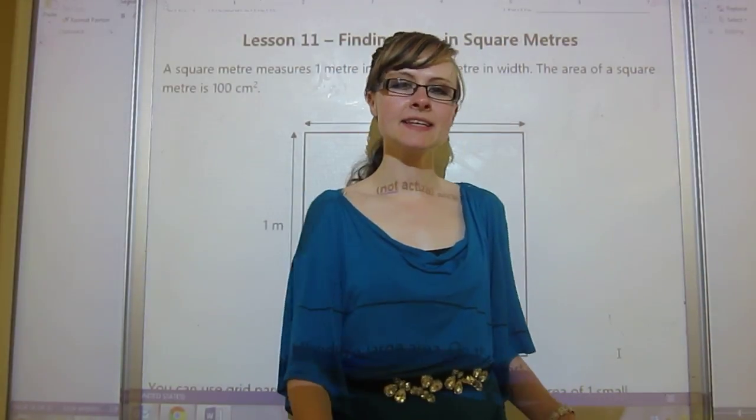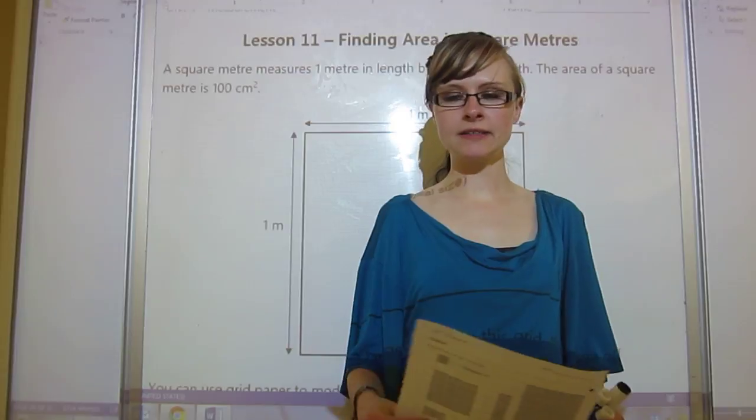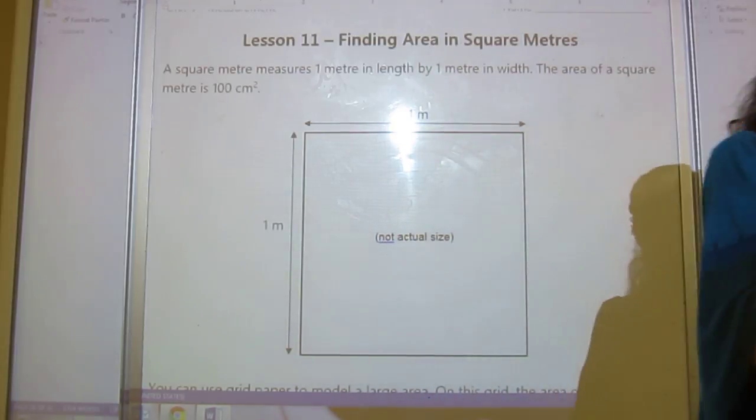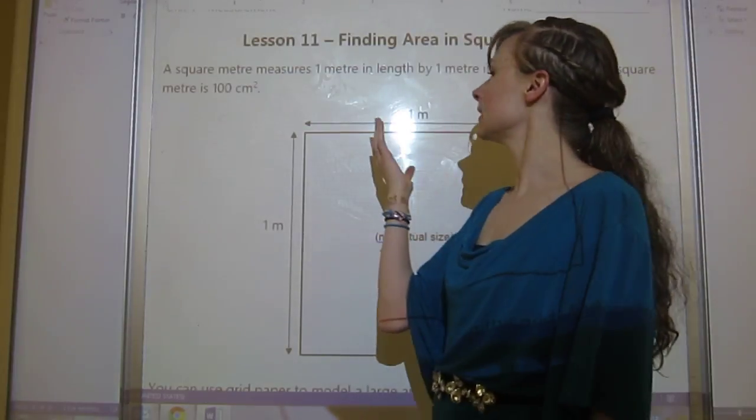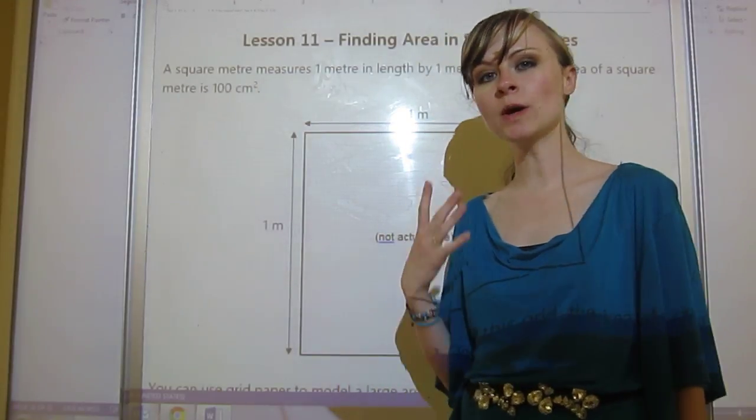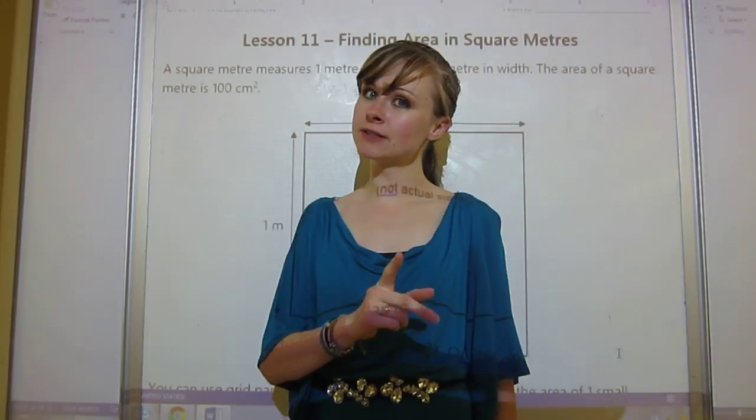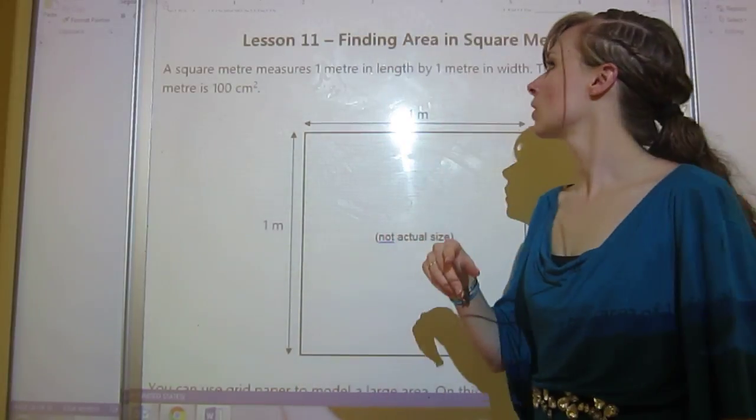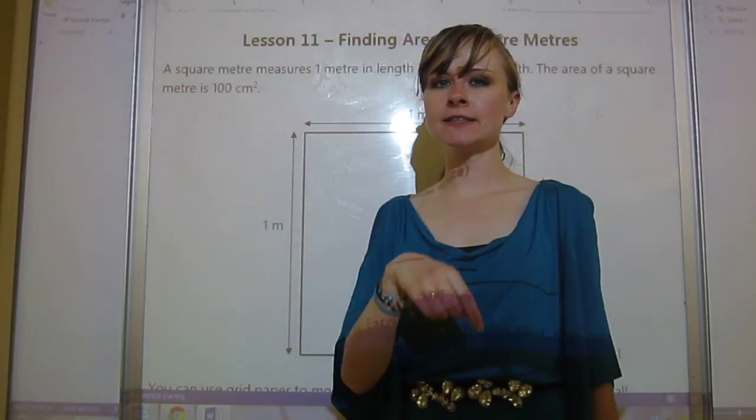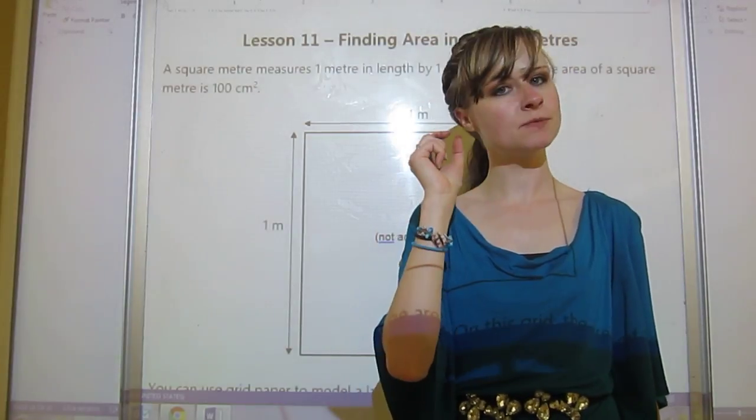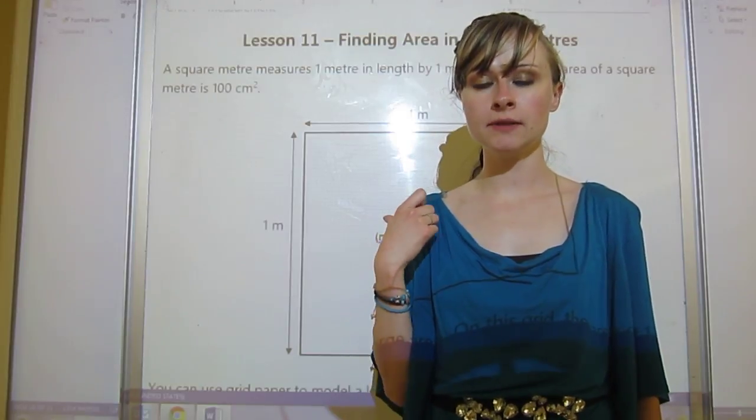Hello, this is lesson 11, finding area in square meters. The sheet says that a square meter measures one meter in length by one meter in width. It's sort of like a centimeter squared or a square centimeter, except instead of each side being one centimeter in length, this is one meter in length.